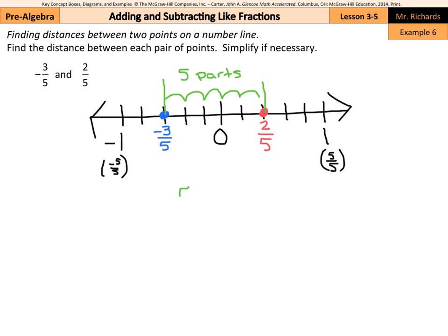And each part is a fifth. And so this is 5 parts over the 5, since we're divided into fifths. And so our answer is 5 over 5, which is also 1. So how far are they apart? 1 unit.